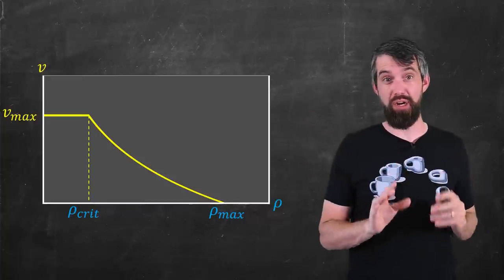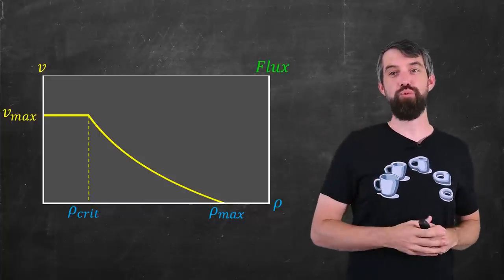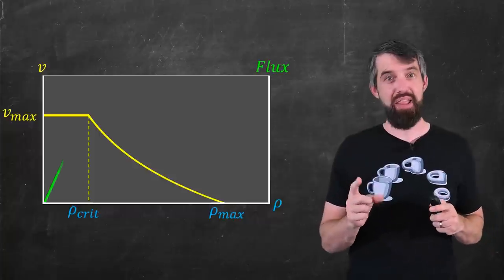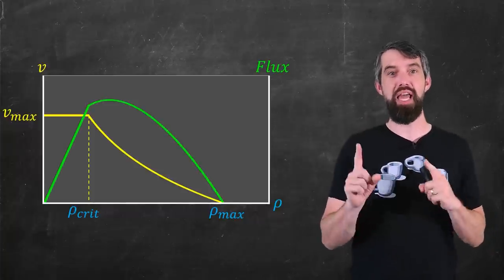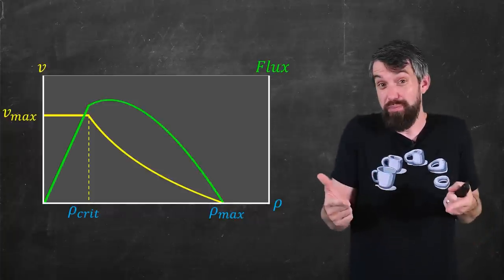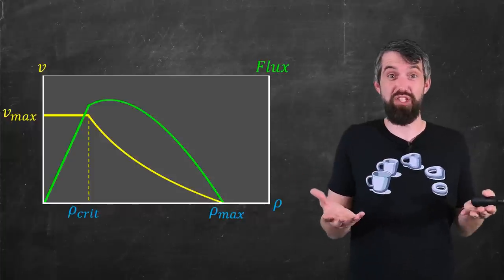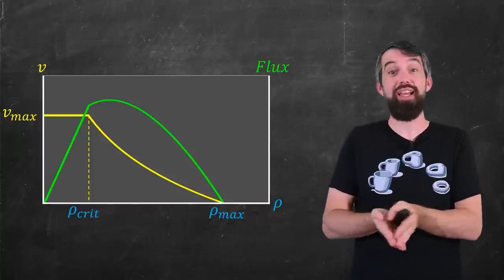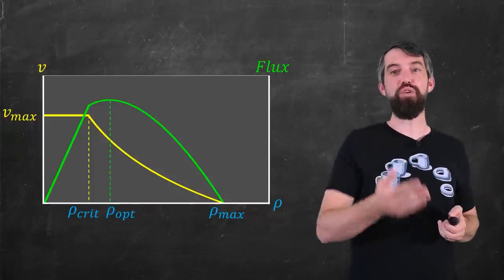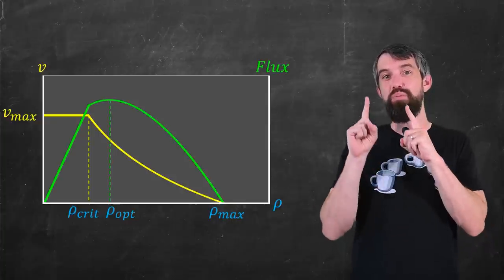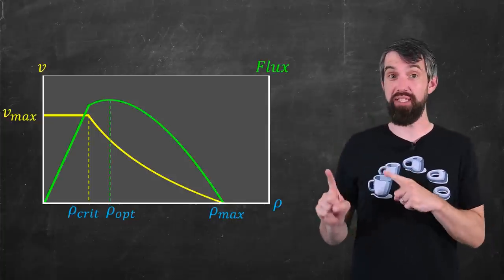So what does this look like? I have my density plot that we've seen earlier. I'm going to put on the right vertical flux, and then the flux looks something like this. In the initial portion up to ρ_crit, where velocity is constant, and so our flux is just that constant times ρ. It's linear. And then afterwards you have this maximum at the optimal density, and it decreases from there.